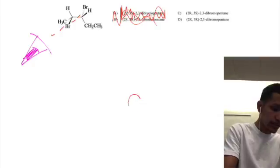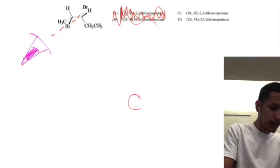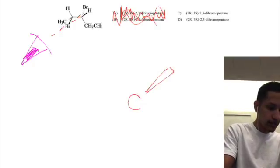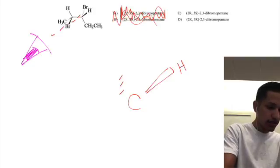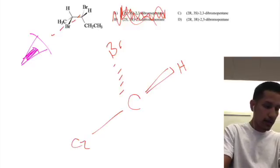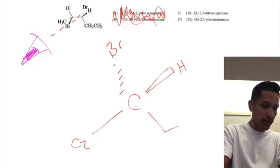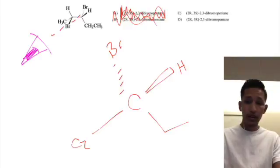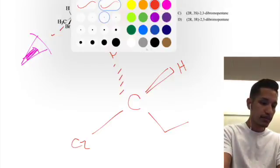We're going to go ahead and draw that out. That's going to look like a carbon with a hydrogen going towards us, bromine going away from us. We've got our second carbon here, and then we've got our ethyl group. So now we're going to prioritize.